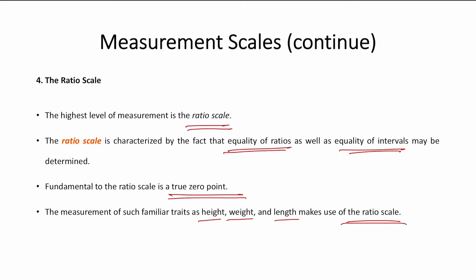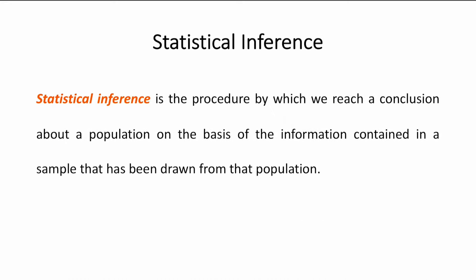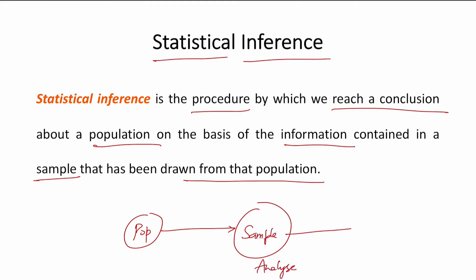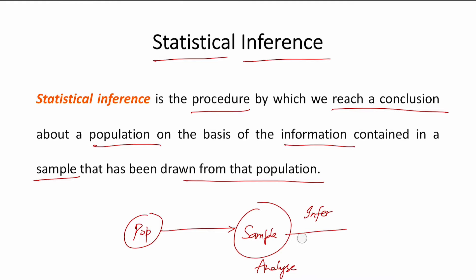Statistical inference refers to the procedure by which we reach a conclusion or decision about a population based on information contained in a sample drawn from that population. We take a sample from the population, analyze the sample, and then infer conclusions back to the population. This process is called statistical inference.